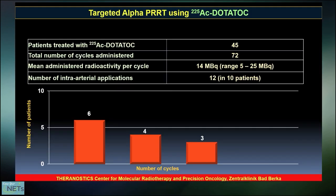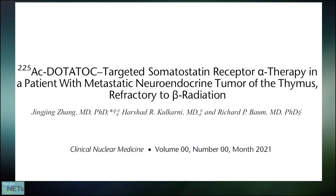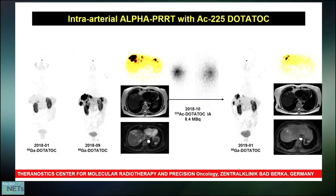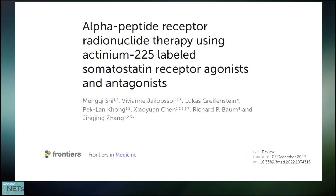Our group at my time in Bad Berka has treated a large number of patients with Actinium-225. We published, for example, a patient with a neuroendocrine tumor of the thymus with extensive pleural metastases that progressed very fast within one year. After treatment with Actinium-225 DOTA-TOC, there was a nearly complete remission, despite failure on previous beta therapy. Another patient was treated intra-arterially with Actinium-225 DOTA-TOC, and again there was a response to the alpha therapy despite failure of beta therapy.